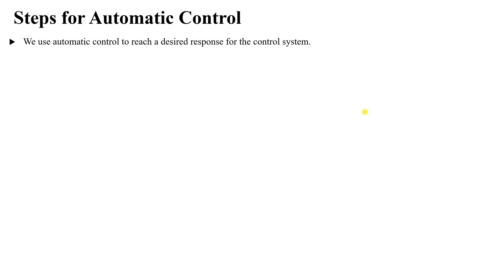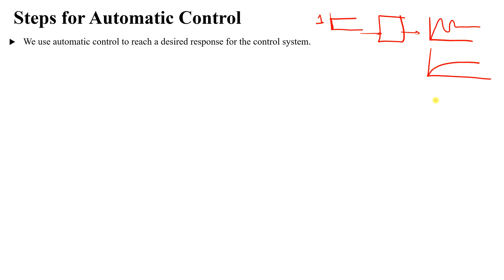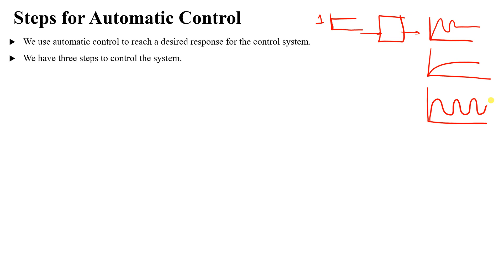Automatic control is used to reach a desired response for a system. For example, we have a certain system subjected to a step input, and this system can respond in many different ways. So if we would like to have a desired response and reach the steady-state value we need, we must control this system.